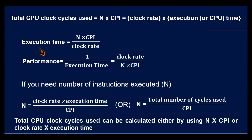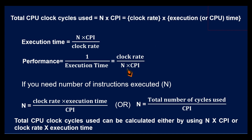Now we know that performance depends on execution time. From this, we can derive that execution time = N × CPI / clock rate. That is, N × CPI divided by clock rate gives the execution time. And since performance = 1 / execution time, it can also be expressed as clock rate / (N × CPI). If you know the clock rate, the number of instructions executed, and the CPI, you can find the performance using this formula.